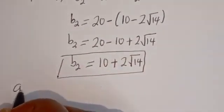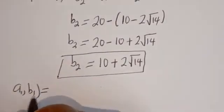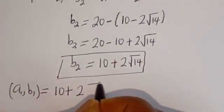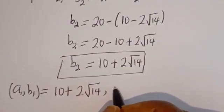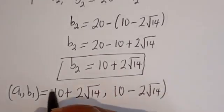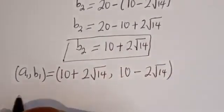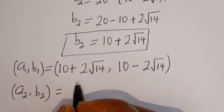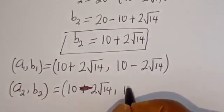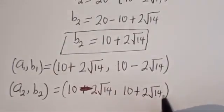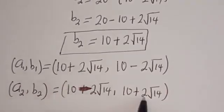Therefore, the paired solutions are: a1, b1 equals (10 plus 2 root 14, 10 minus 2 root 14), and a2, b2 equals (10 minus 2 root 14, 10 plus 2 root 14). Notice that a1 equals b2 and b1 equals a2.